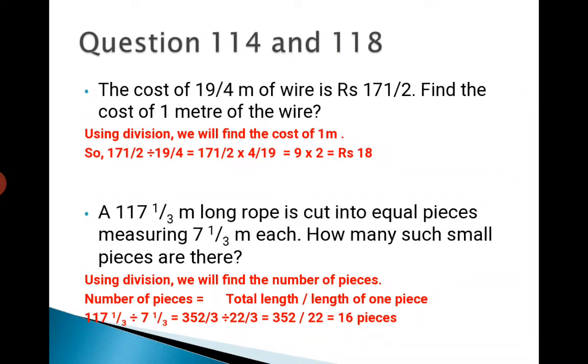Question number 114 and 118. The cost of 19/4 meter of wire is rupees 171/2. Find the cost of 1 meter of the wire. Because the total cost is given and the total wire length is given, we will use division. So we will divide the total cost by the total length: 171/2 divided by 19/4. When we change the sign, 19/4 becomes 4/19. We cancel and the answer is rupees 18.